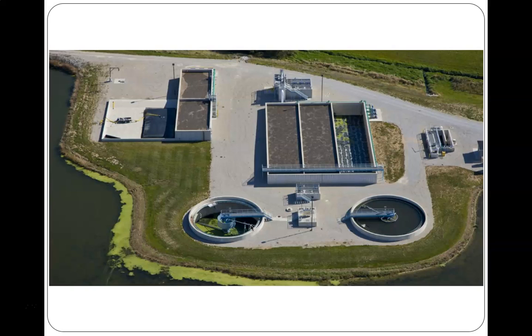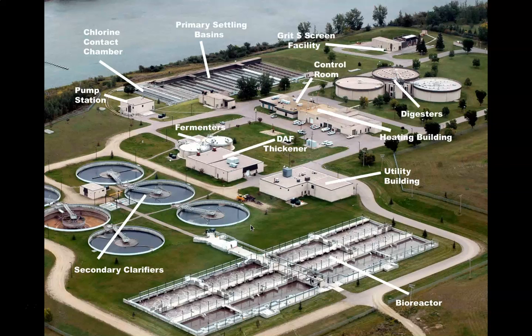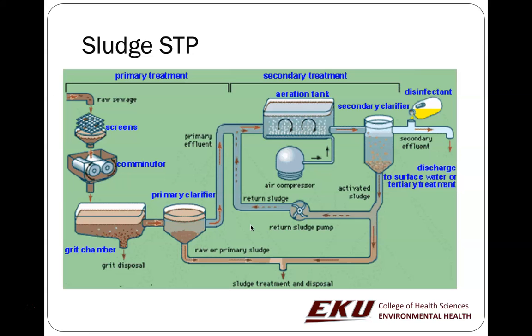The size of plants varies. There are small plants — for example, Bettyville, Kentucky has one that's quite small. Then you can get up into larger plants, like the Otter Creek Wastewater Treatment Plant, which we'll look at in a moment, and plants can get even larger from there.